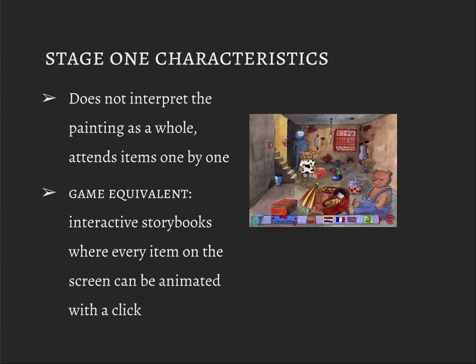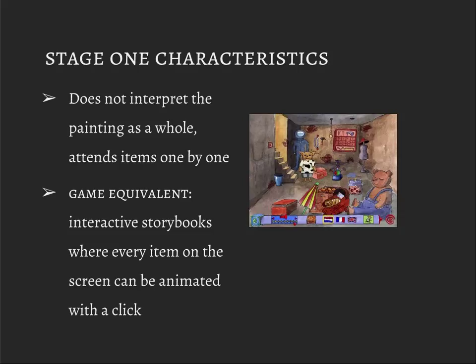You can have game equivalents of this. Think of interactive storybooks where every item on the screen is clickable and produces a silly animation. This is for little kids — and this is why. Because this is what appeals to them at that stage; they can't make more sense of things yet. So that's stage one.